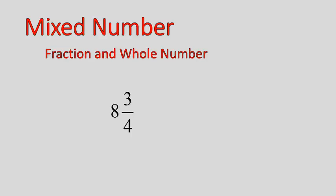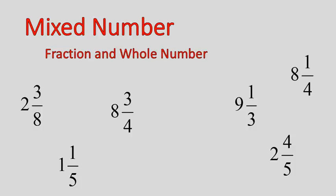So a mixed number is a fraction and a whole number. Here are some examples of mixed numbers. They're just a number with a fraction: 2 and 3 eighths, 1 and 1 fifth, 1 and 3 sevenths. Those are just examples. So you can see you have the whole number, and then you have a fraction.